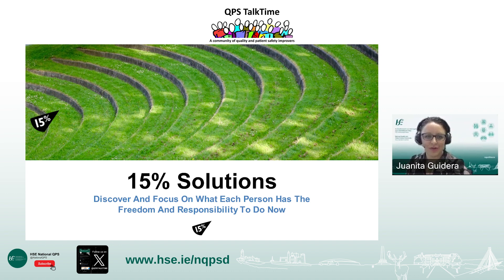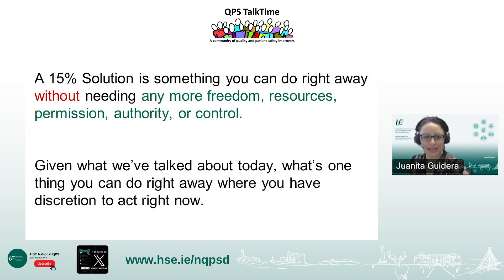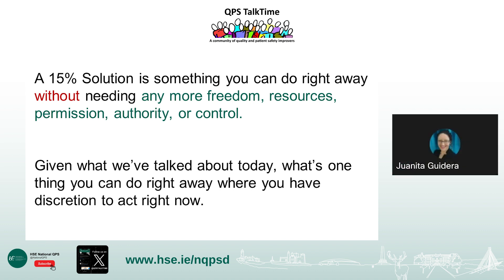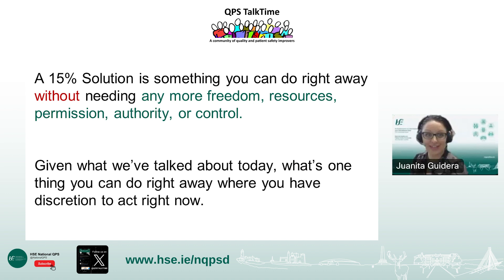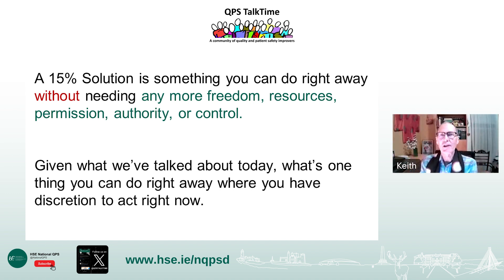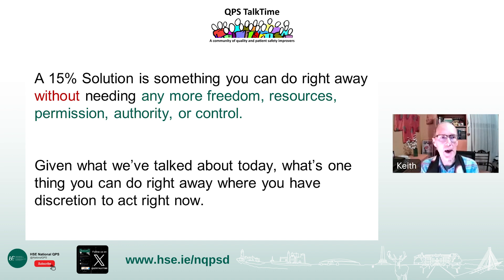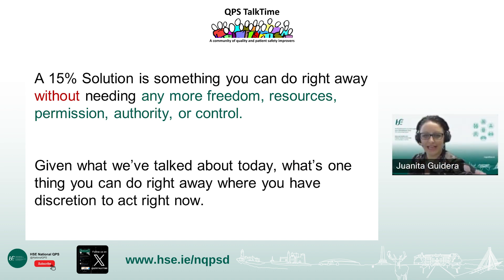We're going to look at the 15 Solutions structure now. The question is: what's one thing you can do right away without needing any more freedom, resources, permission, authority, or control — something you can do in the moment? Given what we've talked about today, what's one thing you can do right where you have the discretion to act right now? As Keith mentioned earlier: if you have the same people and the same processes, the thing to change is the patterns of how we relate together. Liberating Structures are rules that establish a new pattern — deliberately but ironically, we're changing the rules that drive the pattern.